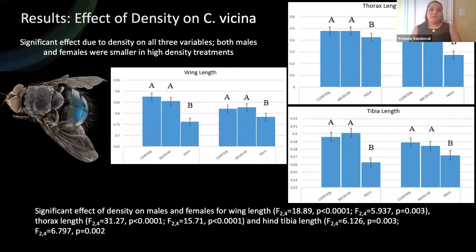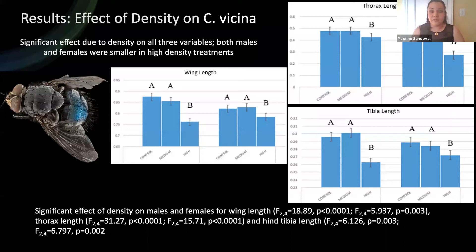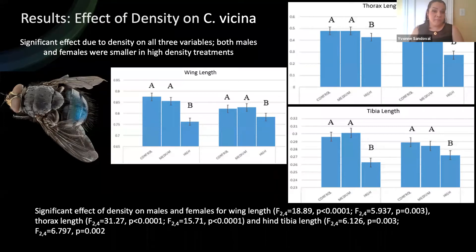Here we have three graphs demonstrating the effect of density on fitness measurements for Calliphora vicina. From left to right, they are length of wing, length of thorax, and length of tibia. The results obtained for both sexes reflected a significant effect due to density on all three variables. Both females and males were significantly affected in high density treatments. Conversely, there is no difference in low and medium treatments.